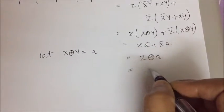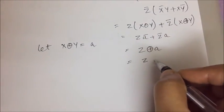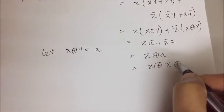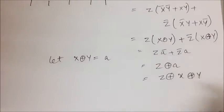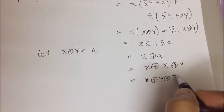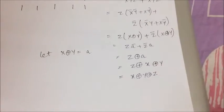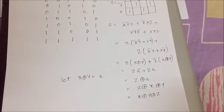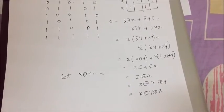So I can write it as replacing a with x x-or y, it can be written as z x-or x x-or y. So we can say like it is x x-or y x-or z.